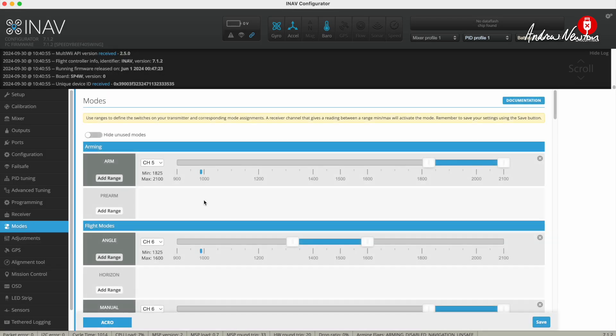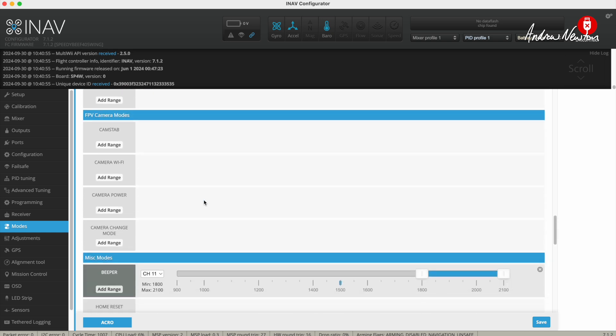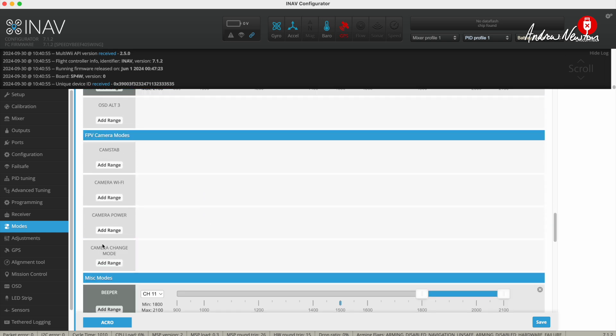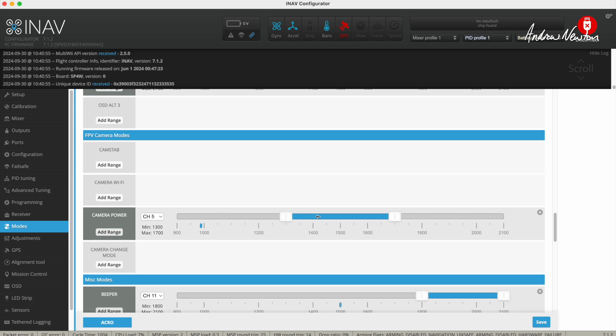Then in Modes we scroll down to FPV camera and we can set up camera power and change mode. There is also camera Wi-Fi but the Thumb doesn't have Wi-Fi. The Runcam 6 does, but this is the Thumb. Camera power to start and stop recording. That's just going to be on a two position switch and I'm going to put it on channel 13.